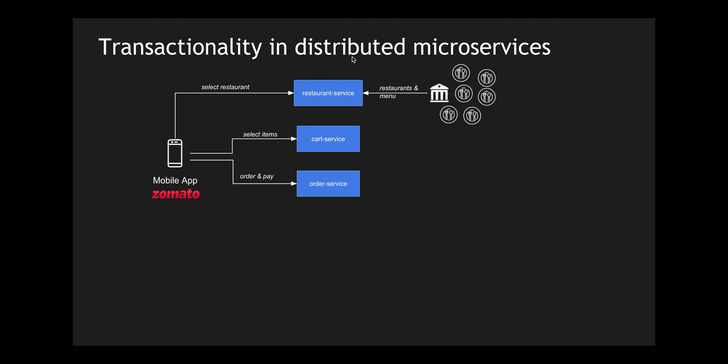The moment you click on order, you order the items and pay for them. Generally, when the order information goes to the order service, it initiates a payment. The request goes from the order service to the payment service, where you enter your credit card, debit card, UPI, or wallet information. The payment service handles different offers and external payment integrations, finalizes the payment, and sends the result back to the order service.